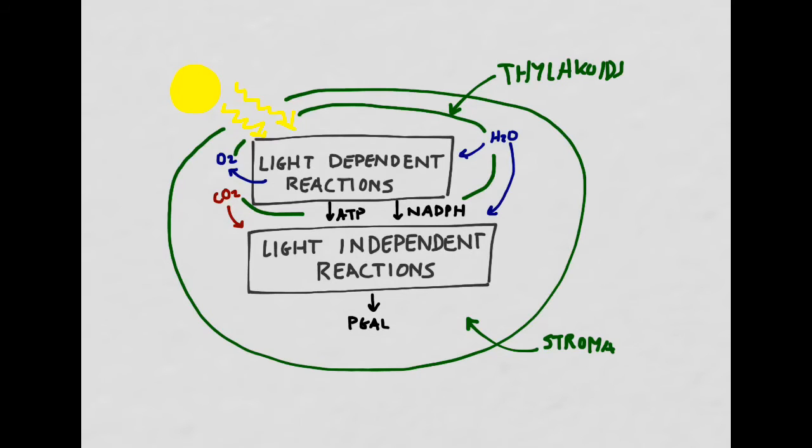So in the light-dependent reactions, we add together photons of light and water, and then we create ATP and NADPH, and then oxygen is a byproduct.